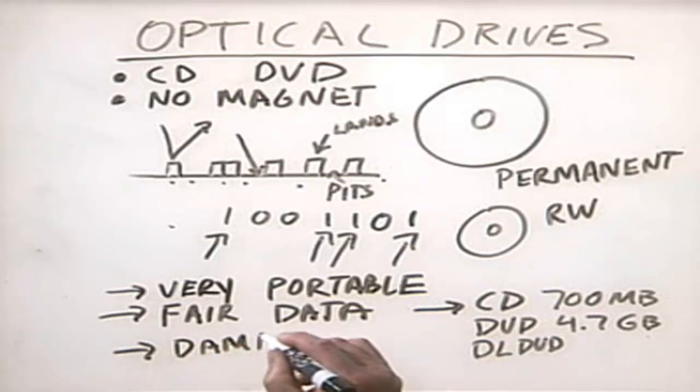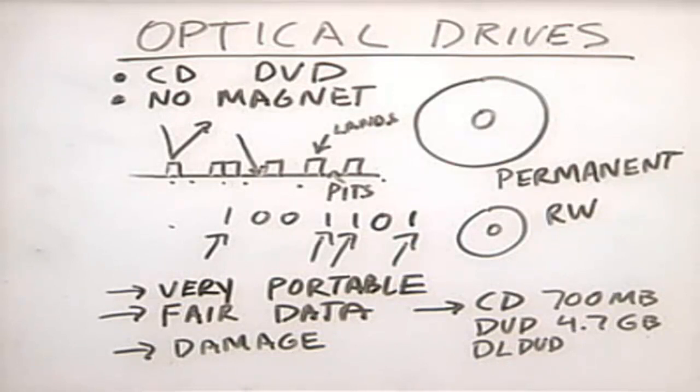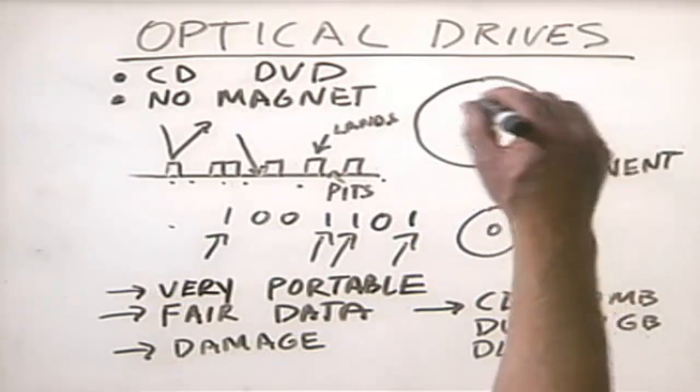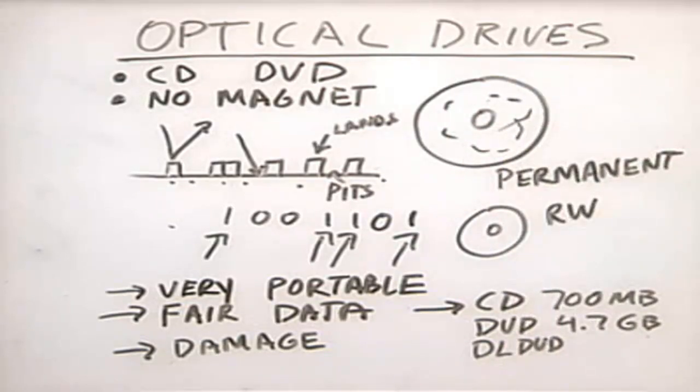One problem with CDs is that they're somewhat susceptible to damage. If you've ever left a CD in the storage bin in your car, after a month of bouncing around the surface gets scratched and it's no longer readable — very frustrating. Optical devices are great for storing music on CDs, videos on DVDs, or backing up information. For example, if you have a two-gigabyte project, you can burn it to a DVD and put it in storage so that if anything bad happens to the hard disk drive, you've got a backup copy.